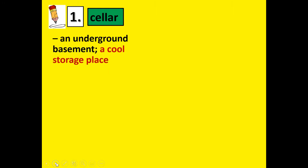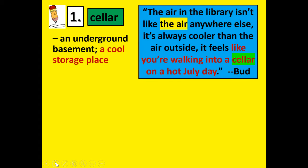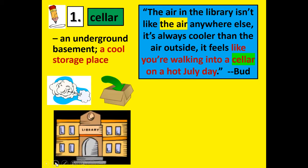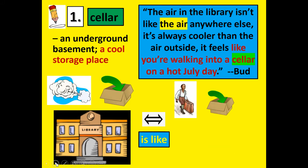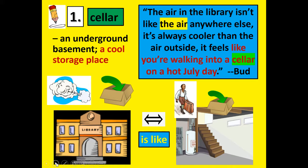For number one, our first vocabulary word is cellar — C-E-L-L-A-R. A cellar is an underground basement, a cool storage place. You could write 'basement' as your synonym. Here is the quote: 'The air in the library isn't like the air anywhere else. It's always cooler than the air outside. It feels like you're walking into a cellar on a hot July day.' Notice he used the word 'like' — that's a simile. Make sure you wrote the word cellar and in the second column wrote basement or cool place.